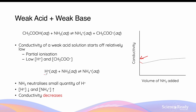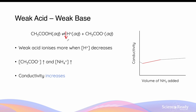As the base is added, the small amount of hydrogen ions present are neutralized, resulting in a small decrease in conductivity. When the hydrogen ion concentration decreases, the equilibrium position shifts toward the product side to counteract that change, producing more hydrogen ions and more acetate ions. However, the hydrogen ions are quickly neutralized by the ammonia added from the burette, so we only see an increase in acetate concentration. As more ammonia is added, we also get more ammonium ions, and the increase in concentration of these ions results in an increase in conductivity.